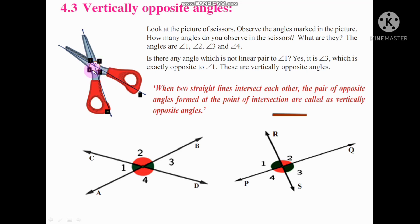What is left over? The angle that is exactly opposite to angle 1 — so angle 1 and angle 3 are called vertically opposite angles. This angle is a vertically opposite angle. Angle 1 is vertically opposite to angle 3, and angle 2 is vertically opposite to angle 4.